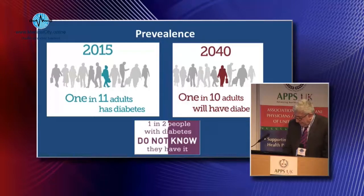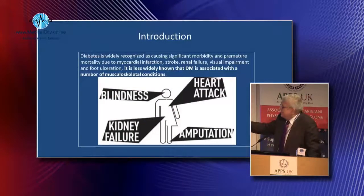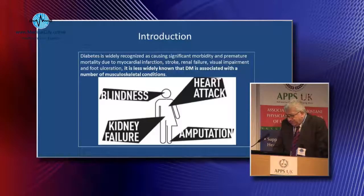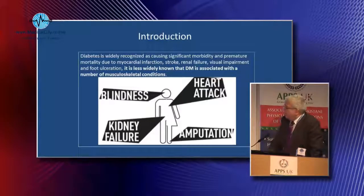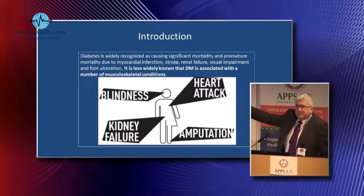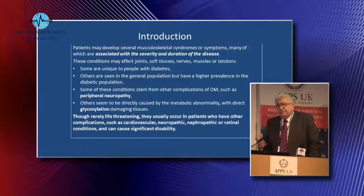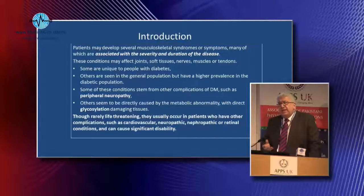Although blindness, kidney disease, kidney failure, ischemic heart disease, and peripheral vascular disease are the main causes of morbidity and premature mortality in diabetes, it is much less widely known that diabetes is associated with a number of musculoskeletal conditions which occur more commonly in these patients, adding to their morbidity. Some of these conditions are age-related and smoking-related, not restricted to diabetes alone.